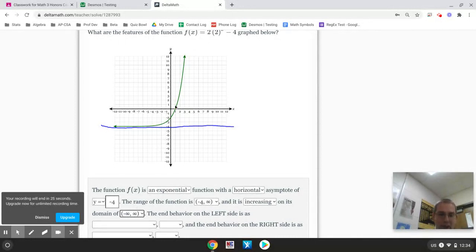Now, the end behavior on the left side. On the left side, x is going to negative infinity. And the horizontal asymptote makes it get stuck at negative 4.